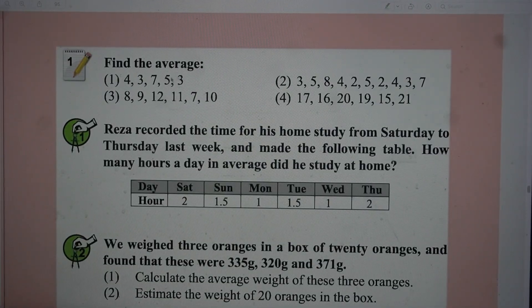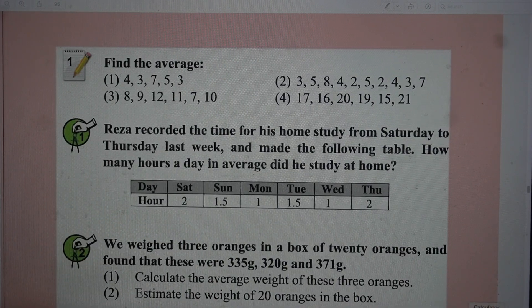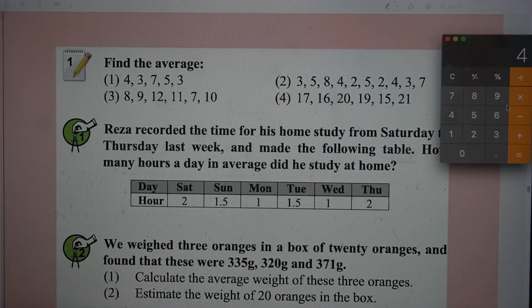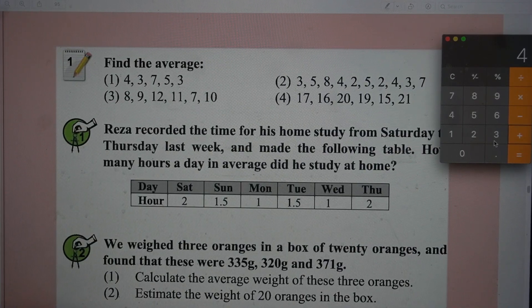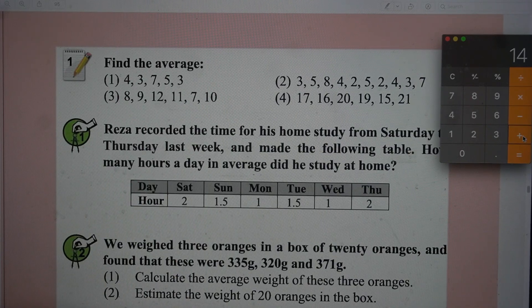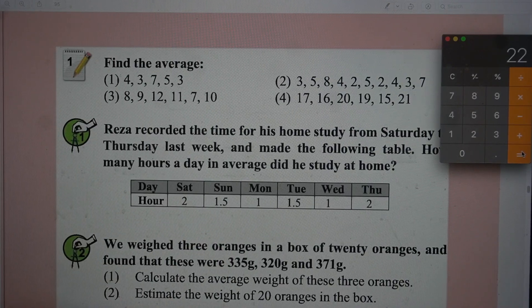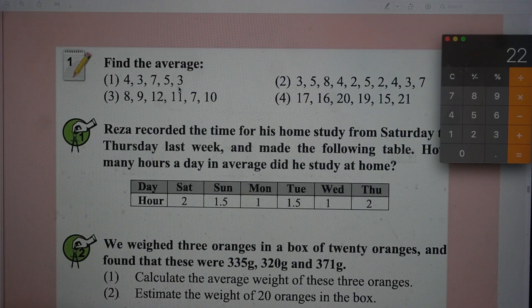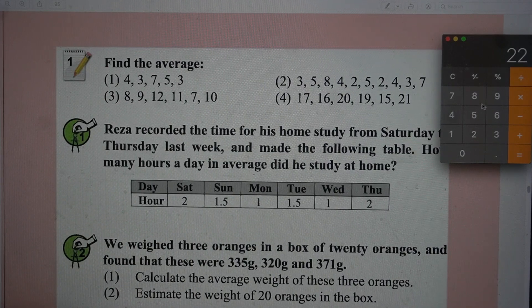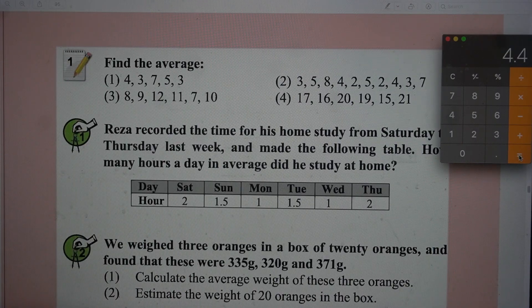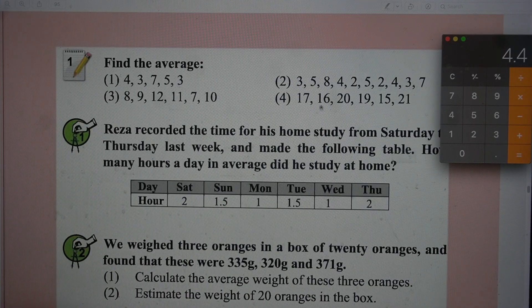Let's see an example. Let's find out the average for the first one. The numbers are 4, 3, 7, 5, 3. The sum is 22 divided by 5, which is 4.4. So this is the average of the first problem. Similarly you can find out the average for the remaining ones.